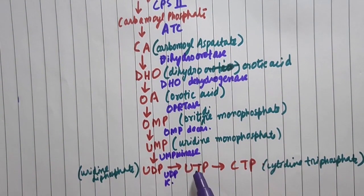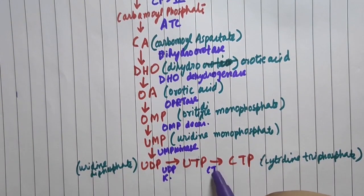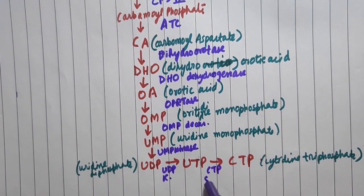To convert UTP to CTP, we use a particular enzyme called CTP synthase.